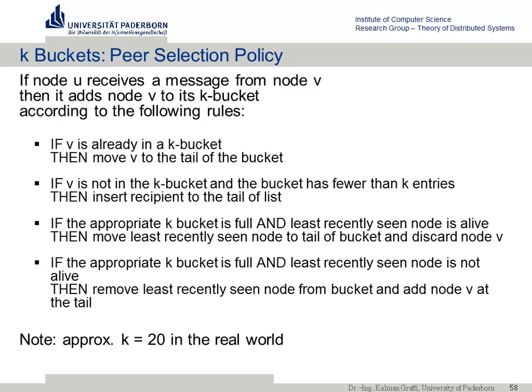If the K-bucket is full: check whether the head node (least recently seen) is still alive by pinging it. If it is alive, move it to the tail and discard the new contact V — we keep old contacts. If the head node is not alive, drop it and insert the new contact V at the tail. A typical K value in Kademlia implementations is 20, giving up to 160 × 20 = 3,200 routing table entries in the worst case.